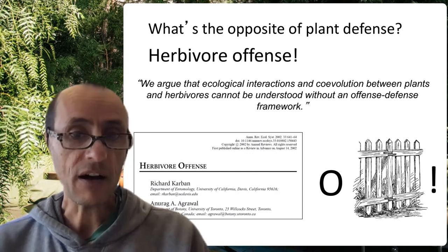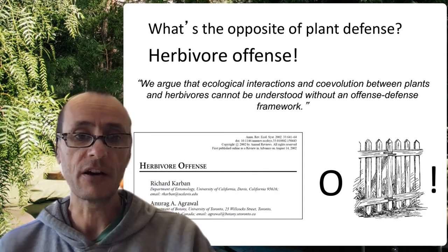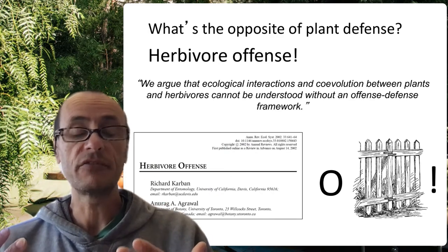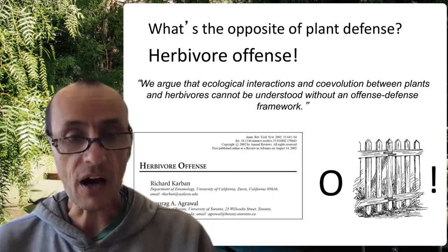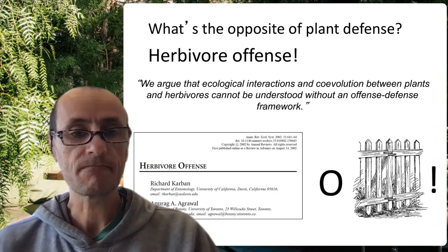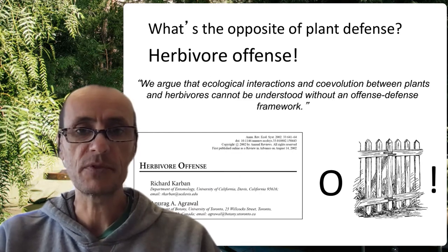How do insects deal with all these nasty chemicals and defenses that plants throw at them? Just like plants, which are subjected to the negative effects of insects feeding on them and therefore have a lot of selective pressure that could benefit the evolution of traits allowing them to resist herbivores, insects face the same challenge. What's the opposite of plant defense? It's herbivore offense. This paper by Rick Carbon and Anurag Agrawal outlines the essence of these interactions — it's not just plants defending themselves against herbivory, but also herbivores having to overcome those defensive traits. That's what we're going to talk about in this lecture.